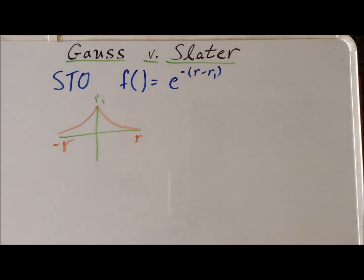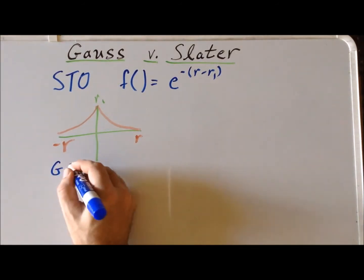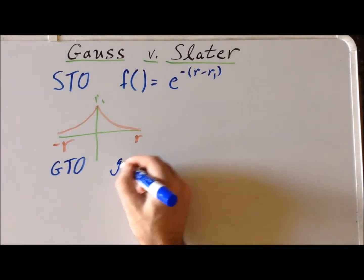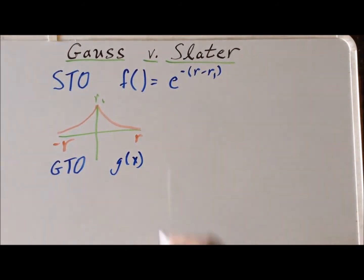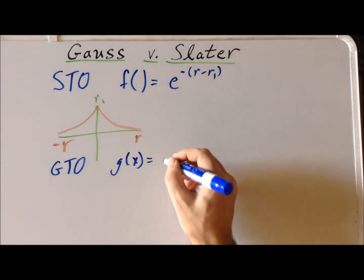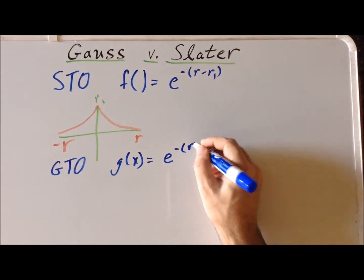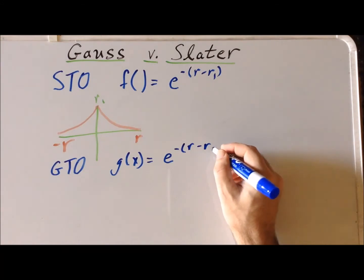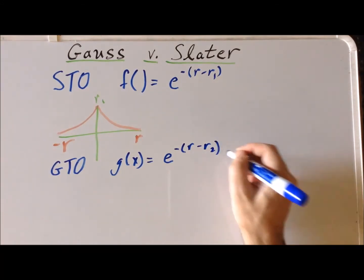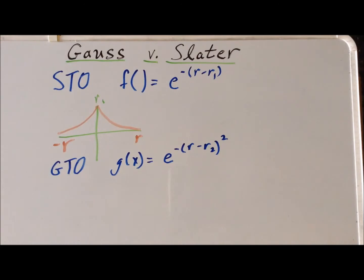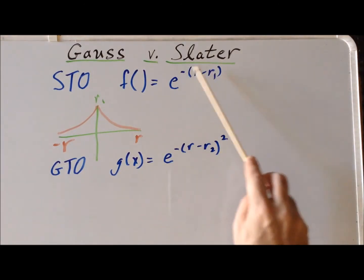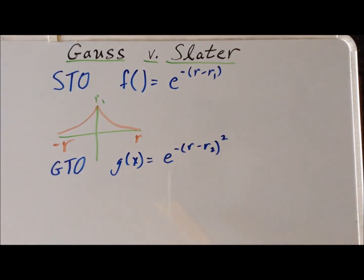So what about Gaussian-type orbitals — GTOs? We can think of these as functions with possible linear or quadratic factors in x, y, and z, but ultimately with an exponential part that is very subtly different from a Slater-type orbital. The important feature is that now the variable is squared — r2 — so we have r to the second power in the exponent, compared to the first power for STOs, and that makes all the difference.